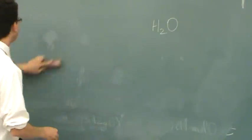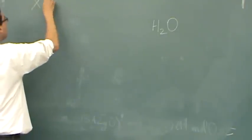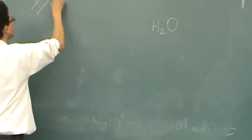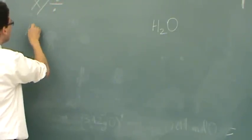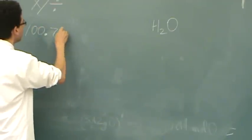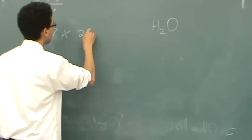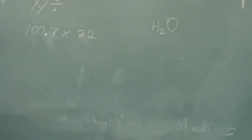Now, when you're talking about multiplication or division, then you go 100.7 times 22. How many sig figs will I have in my answer? Two. Two. So you take the one that's lowest, and that's the sig figs for your answer.